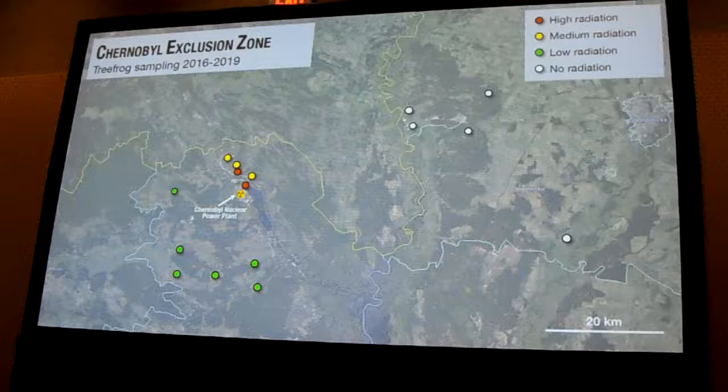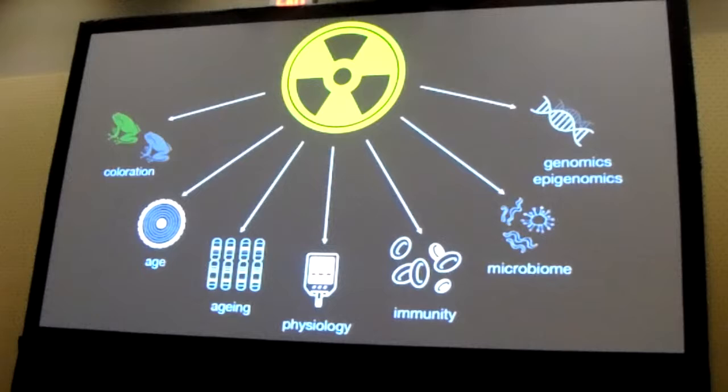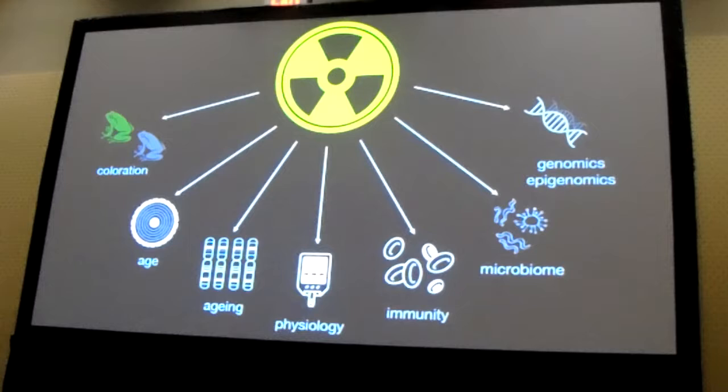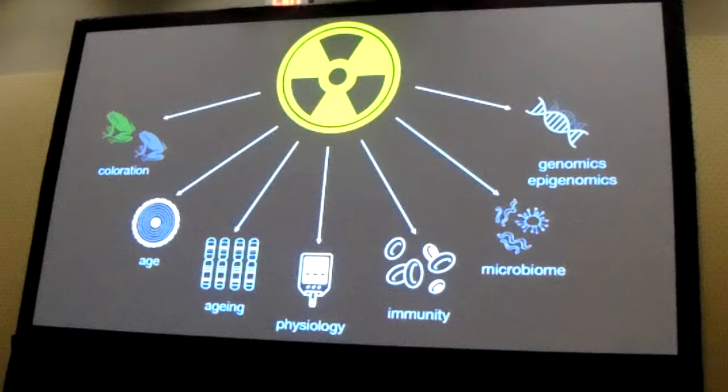With these localities, we try to maximize the range of traits that we have been examining. We have been looking at morphology, physiology, effects on age, and moving now to the epigenome, metagenome, and genomics. So the first results — I'm going to show you some preliminary results of some of the ideas we are working with right now.